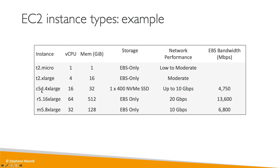If we go to completely different levels — for example the C5D 4xlarge — you get 16 vCPUs, 32 gigabytes of memory, and storage physically attached to your EC2 instance: 400 NVMe SSD. The network becomes really good, up to 10 gigabytes, as well as high bandwidth to network storage. As you can see with R5 16xlarge or M5 8xlarge, you get different characteristics — so the idea is to choose the instance type that fits your application best and use it on demand in the cloud.